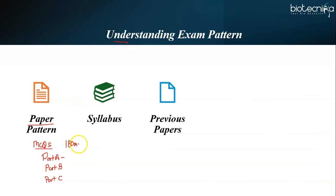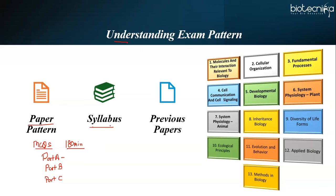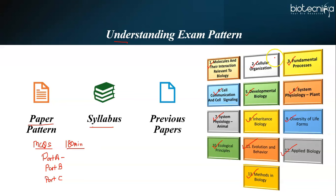The duration of the examination is around 180 minutes or 3 hours. The syllabus of CSIR Net Life Science examination comprises 13 units: Unit 1 - Biochemistry, Unit 2 - Cell Organization, Unit 3 - Fundamental Processes, Unit 4 - Cell Communication and Cell Signaling, Unit 5 - Developmental Biology, Unit 6 - System Physiology (Plants), Unit 7 - Animal Physiology, Unit 8 - Genetics (Inheritance Biology), Unit 9 - Diversity of Life Forms, Unit 10 - Ecological Principles, Unit 11 - Evolution and Behavior, Unit 12 - Applied Biology, and Unit 13 - Methods in Biology. Going through this syllabus will help you understand the breadth and depth of topics you need to cover.